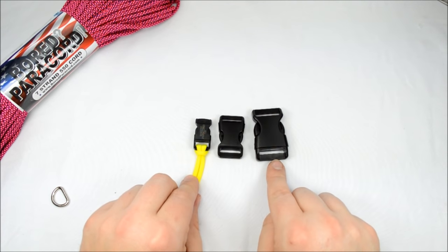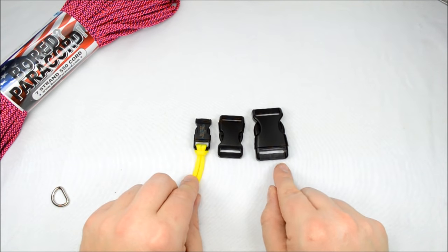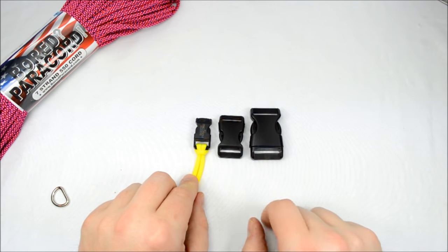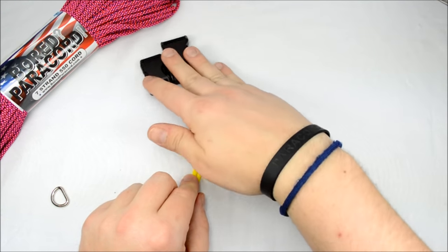And then we move to a one inch buckle. This one, you can do it, but you really got to squeeze them in there. You can get three cow's hitches on there, which opens up another door to different possibilities of designs. We're not going to do that today, though.